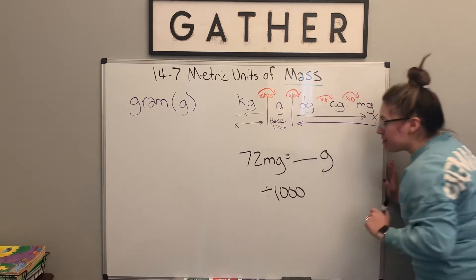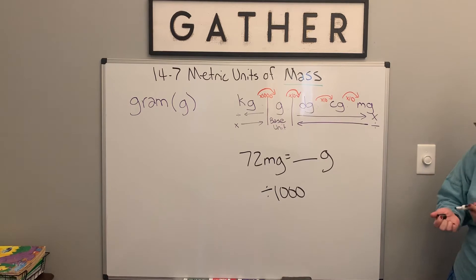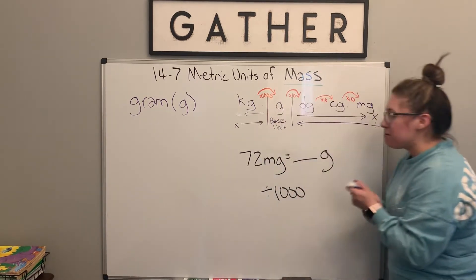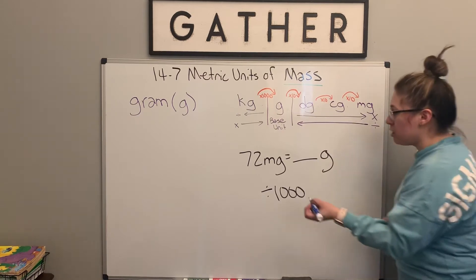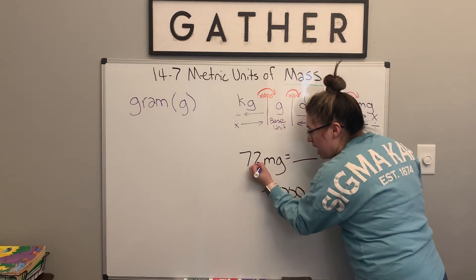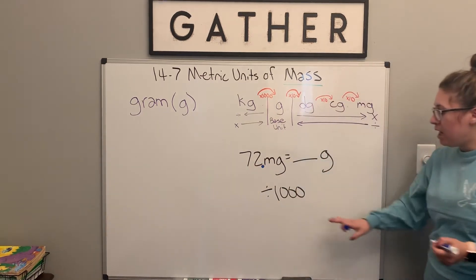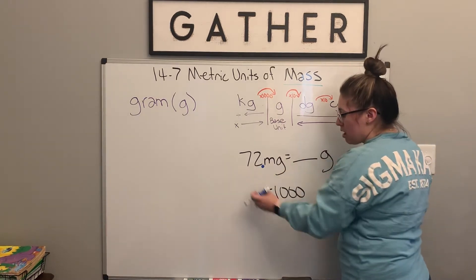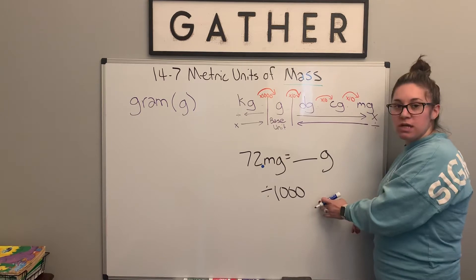All right. So as a reminder yesterday, when we have whole numbers, there is a decimal point there that we don't normally see. We don't normally notice it. It's at the end of that whole number. And if we're dividing by a thousand, that means we can move our decimal place three times because we have those three zeros and a thousand.